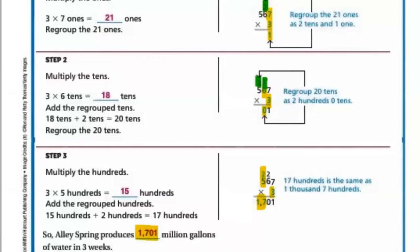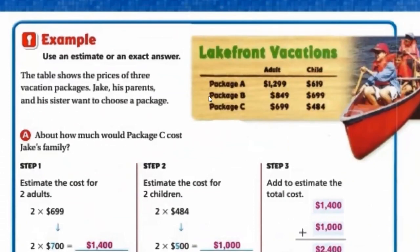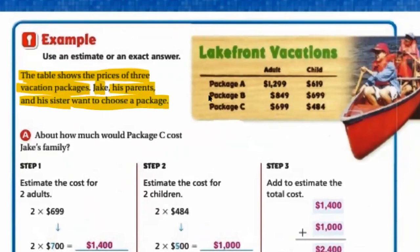Let's move to the next page and read the problem. The table shows the prices of 3 vacation packages. Jack, his parents, and his sister want to choose a package. Let's take a look at this table. We have package A, package B, and package C, with the cost of each adult and the cost of each child.